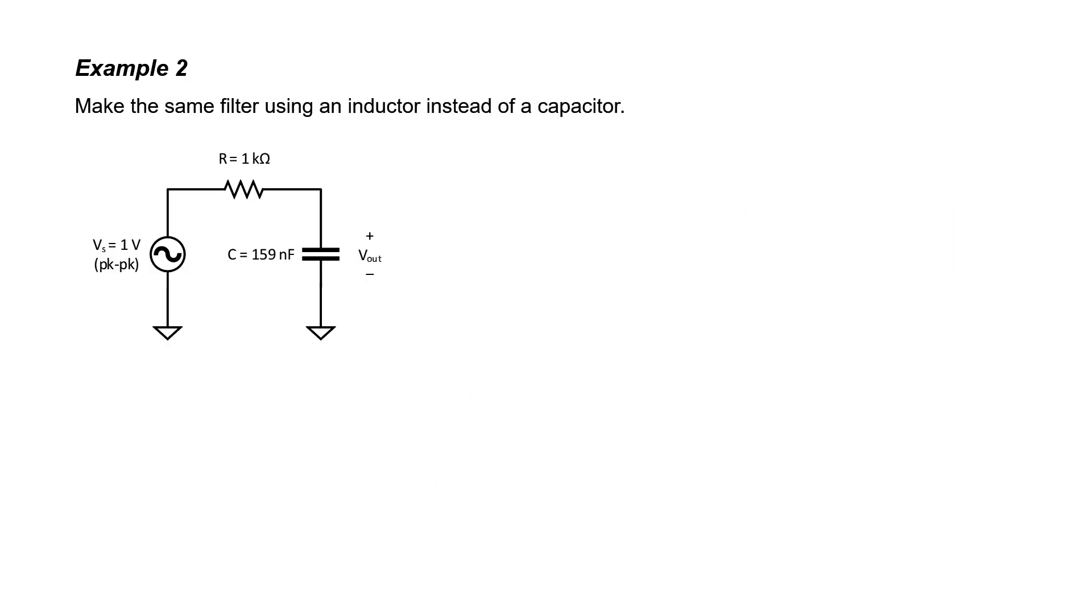In example two, we're asked to make the same filter using an inductor instead of a capacitor. I already know the proper form for this filter from the previous video. We should have an inductor in series and a resistor in shunt. Low frequencies can make it right through that inductor, but it tends to block the high frequencies. It does the opposite of what a capacitor does.